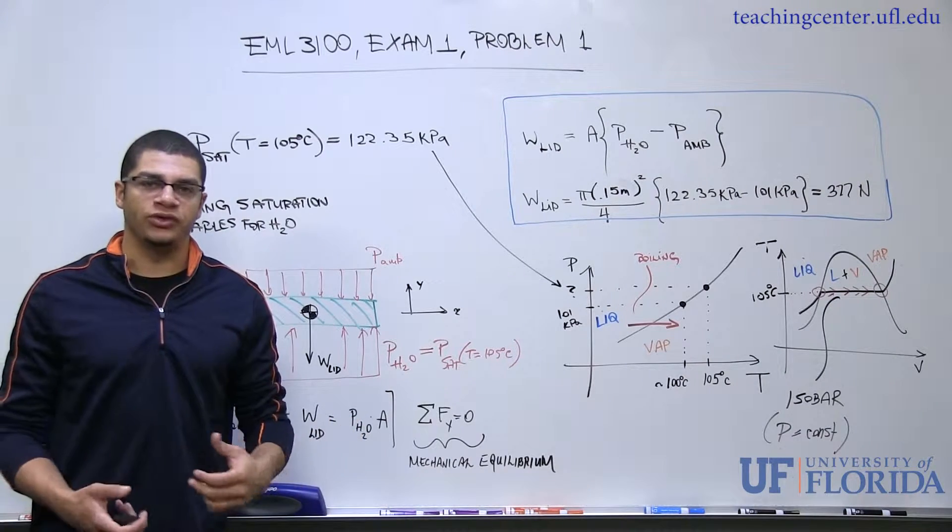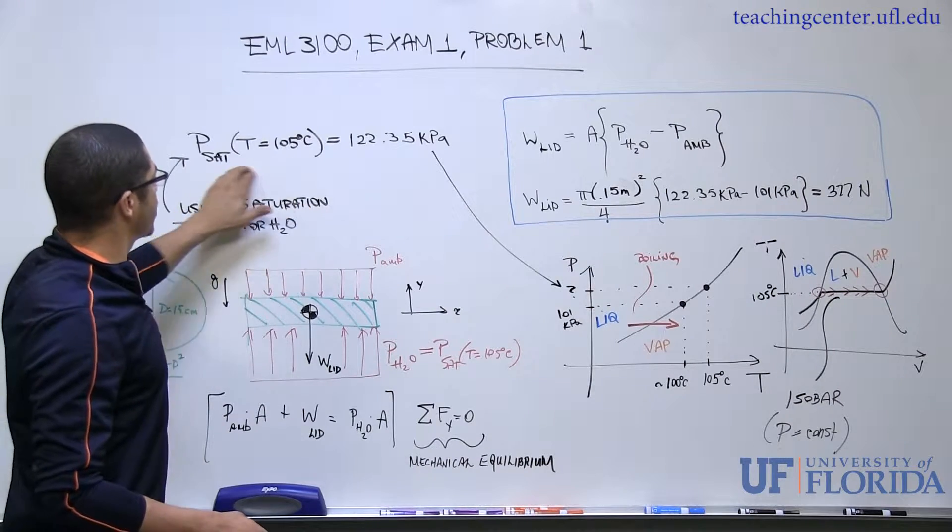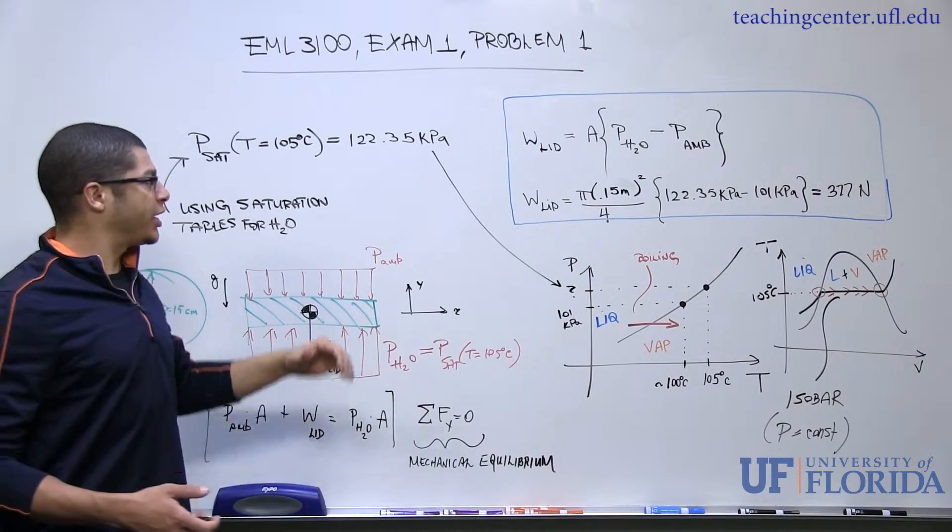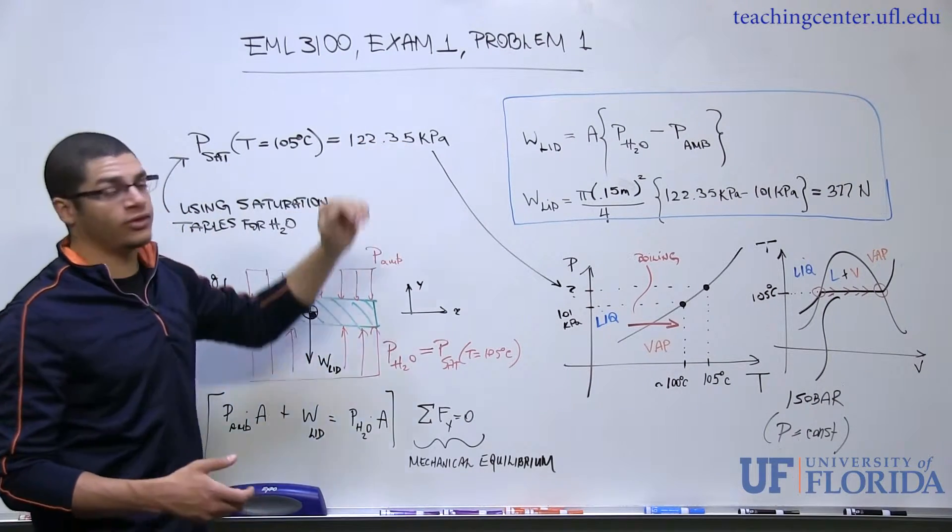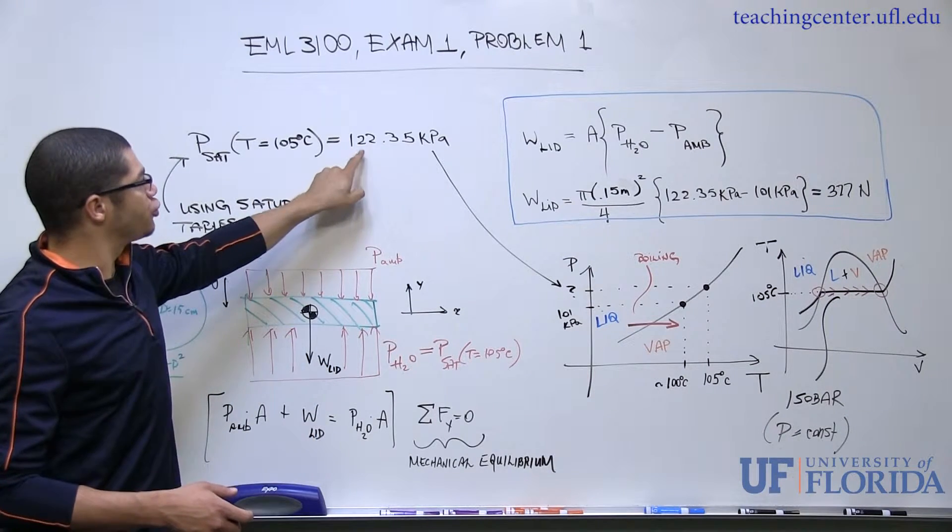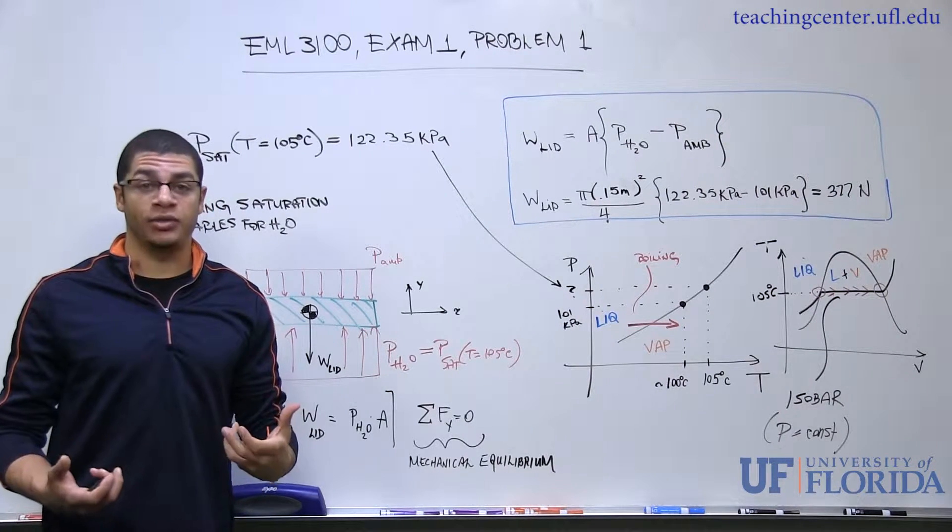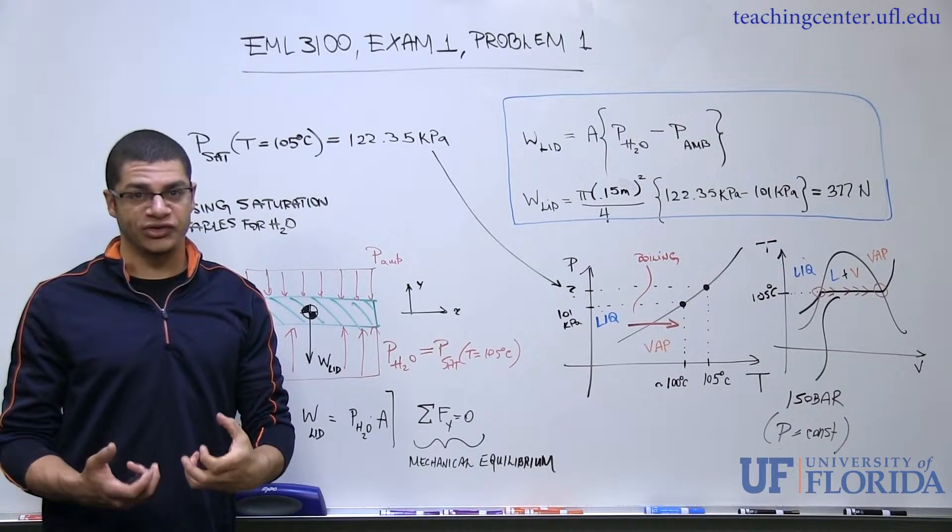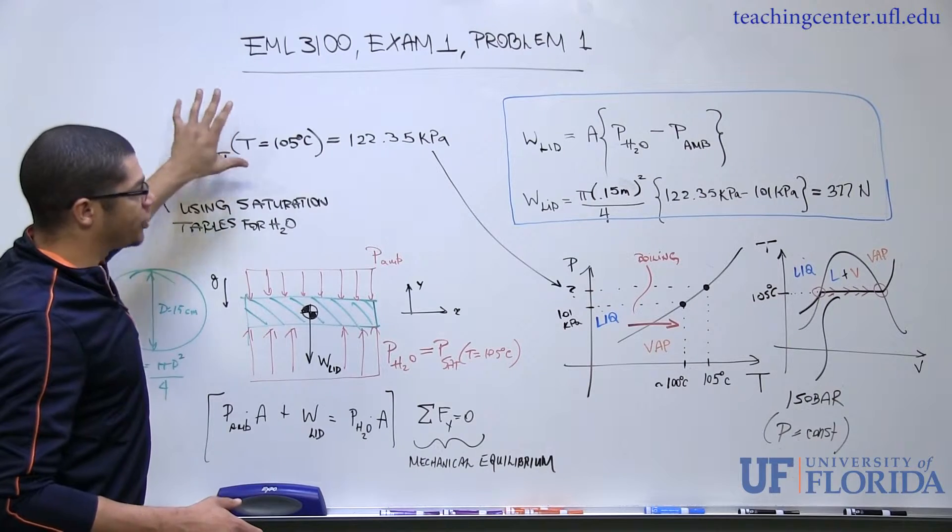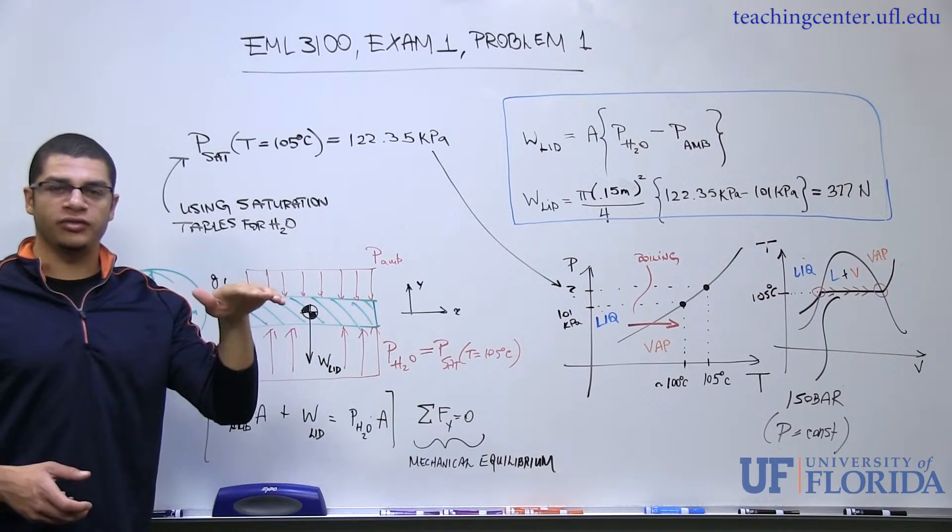Okay, so the next step would be to go to the saturation tables for water and find the saturation pressure corresponding to a temperature of 105 degrees centigrade. And you can pretty readily find out what that pressure is through interpolation, which is not reviewed in this video. That pressure is 122.35 kilopascals, which is expected to be higher than the 101 kPa associated with 100 degrees centigrade saturation temperature. With this in mind, we'll put that aside for now and proceed to do a force balance on the lid of the pot.